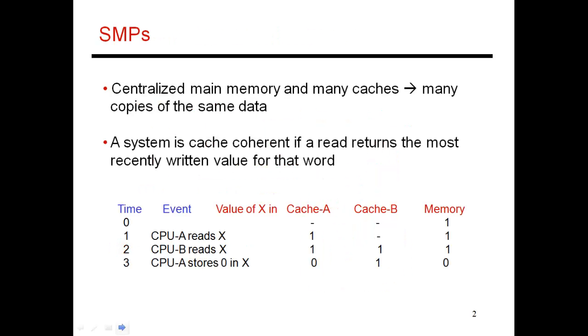I'm showing that over here as well. I'm assuming this model where there's centralized main memory, possibly many caches, and many copies of the same data. Here's a more concrete example down below. There's a value of x that at time 0 is sitting only in main memory. There's a copy of x in main memory that has a value 1, and there are no cache copies in either the cache of processor A or B.